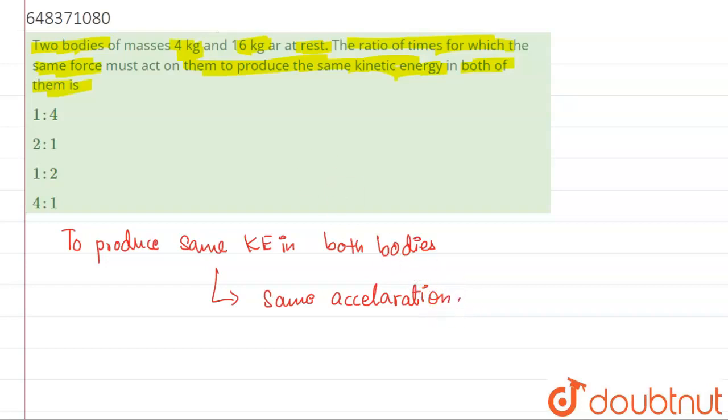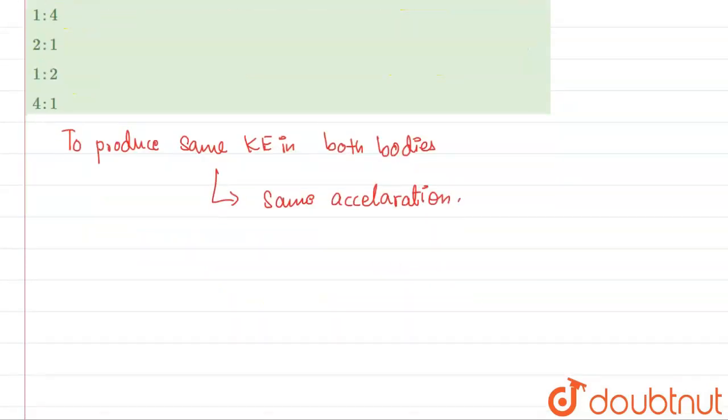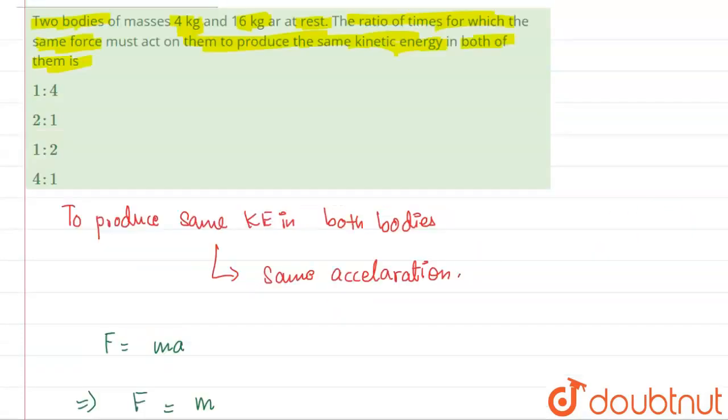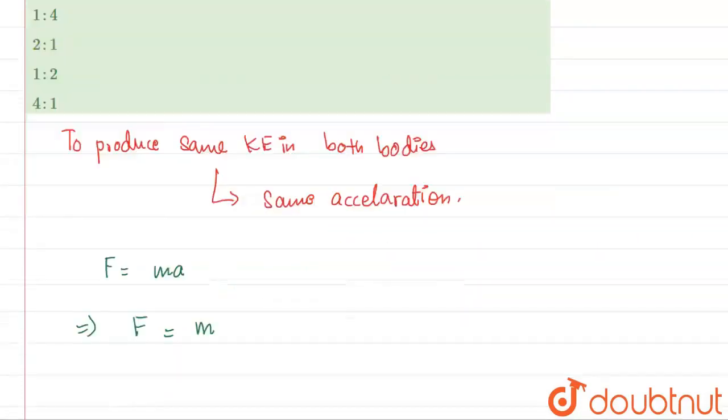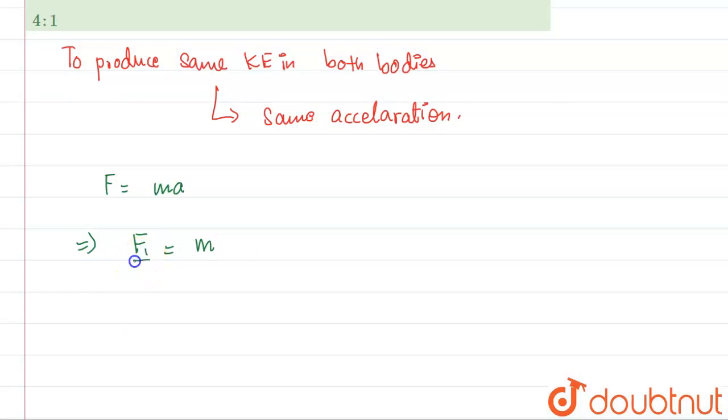So basically over here from Newton's second law, we have force is equal to mass into acceleration. So from here, if we take the two cases over here, what we will have, F1 by F2 must be equal to M1 by M2 divided by A1 by A2.